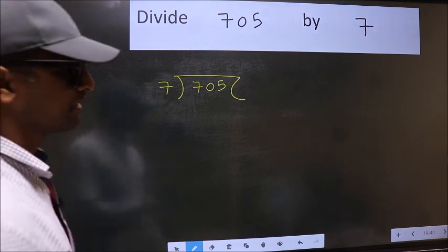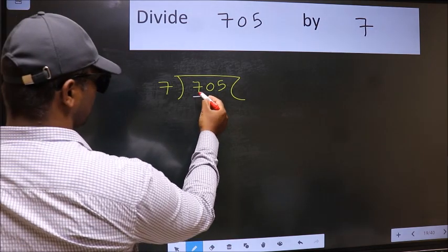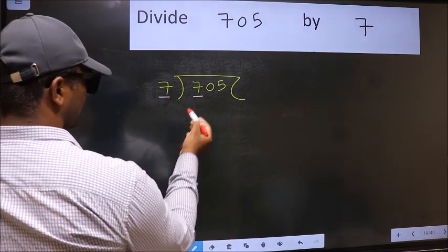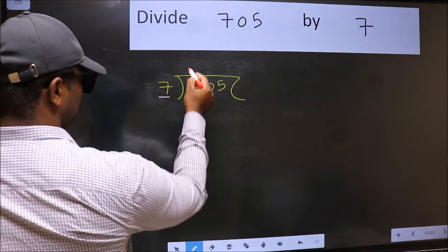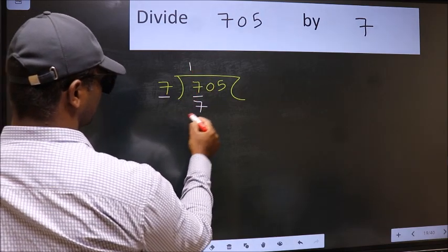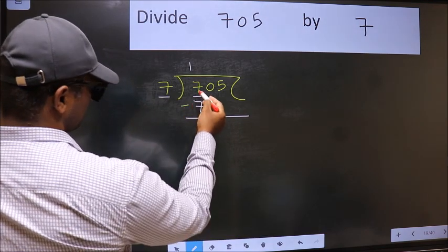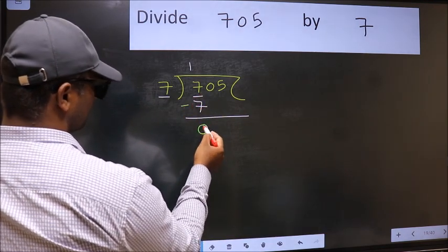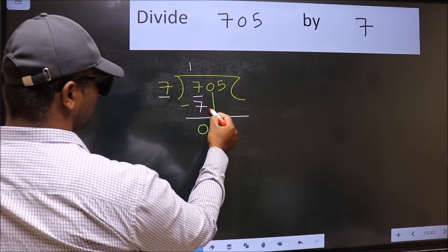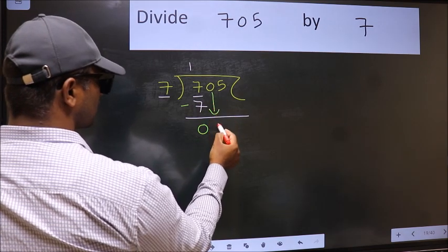Next, here we have 7, here also 7. When do we get 7 in 7 table? 7 once 7. Now we should subtract. 7 minus 7, 0. After this, bring down the beside number. So 0 down.